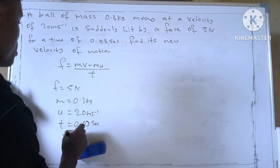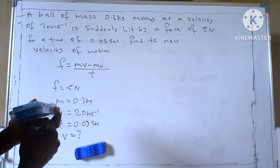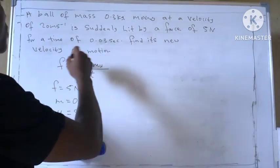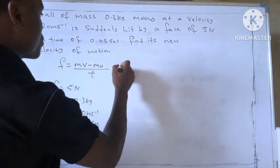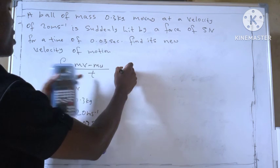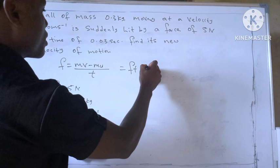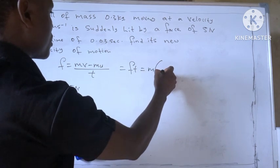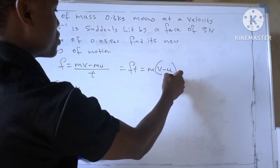So what we are calculating for is V, the new velocity of motion. So let's substitute. So this is the formula, right? Force times time will give us FT equal to, let's factorize, MV minus MU.